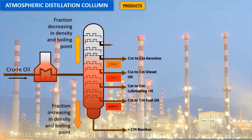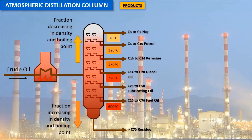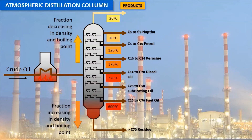Lighter products such as butane and other liquid petroleum gases, gasoline blending components, and naphtha are recovered at the lowest temperatures. Mid-range products include jet fuel, kerosene, and distillates. The heaviest products, such as residual fuel oil, are recovered at temperatures sometimes over 1,000 degrees Fahrenheit.